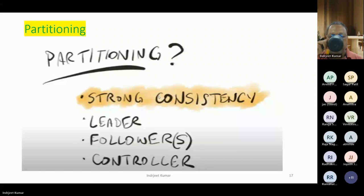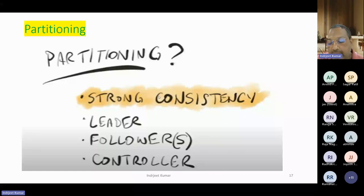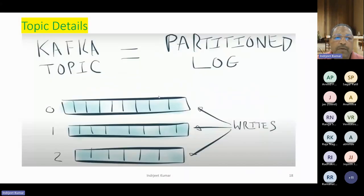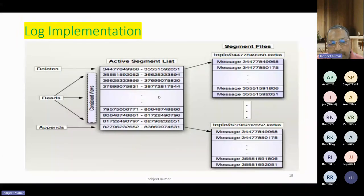Partition is about strong consistency — it has a leader, follower, and controller. Kafka depends on the partition. If a Kafka topic is there and a partition log is there, it keeps on writing on different partitions. Going into more detail, when you read the data, it has an active segment in the partition.